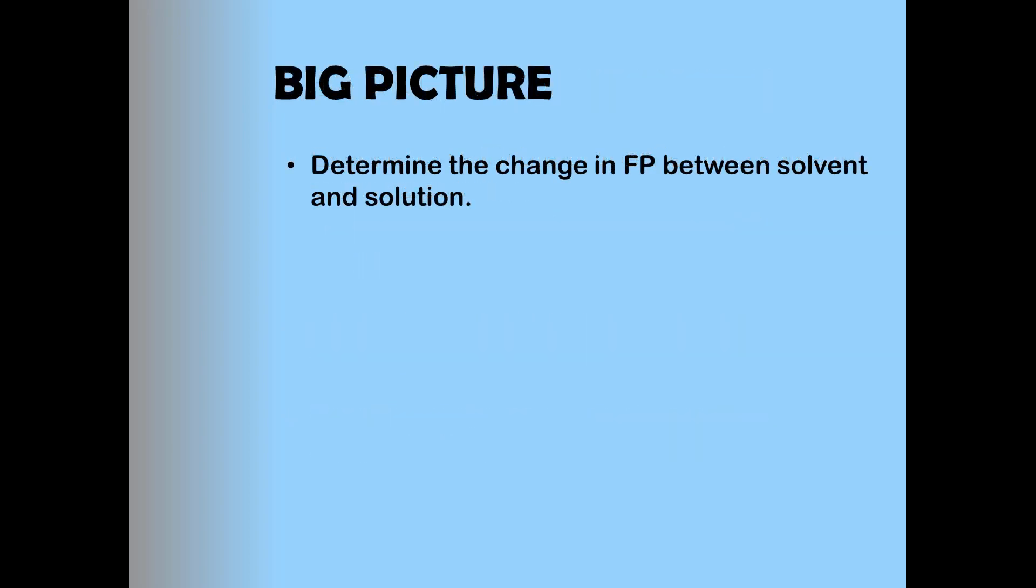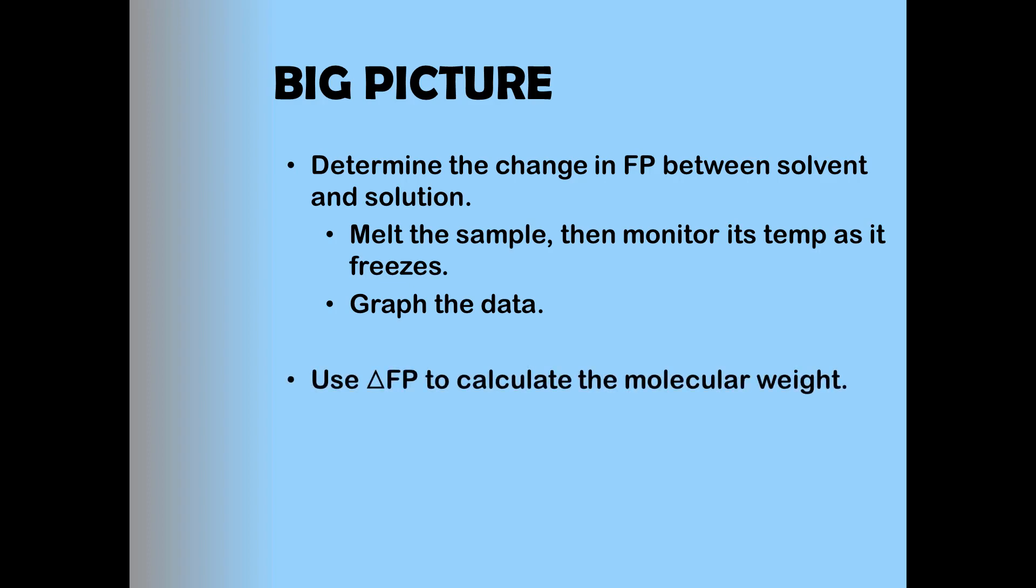The punchline for the day is to determine the identity of an unknown. But there are a lot of things you'll have to do before you get there. First, you'll need to determine the change in freezing point between pure lauric acid and a solution of lauric acid with your unknown solute. This is really easy. Just heat each sample so that it melts, then monitor its temp as it cools and freezes. And after graphing your data, you'll be able to determine your relevant freezing points. You'll then be able to calculate the molecular weight of your unknown using this change in freezing point. And finally, you can then use the molecular weight to figure out the identity of your unknown.